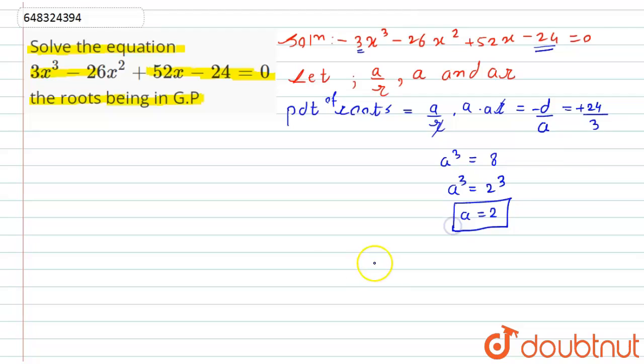equal to a/r + a + ar. This is equal to, now what is the sum of roots? That is -b/a. So it will be equals to, if you see, b is -26, minus minus gets plus, so 26 divided by a, which is 3. So if you substitute the value of a here as 2, it